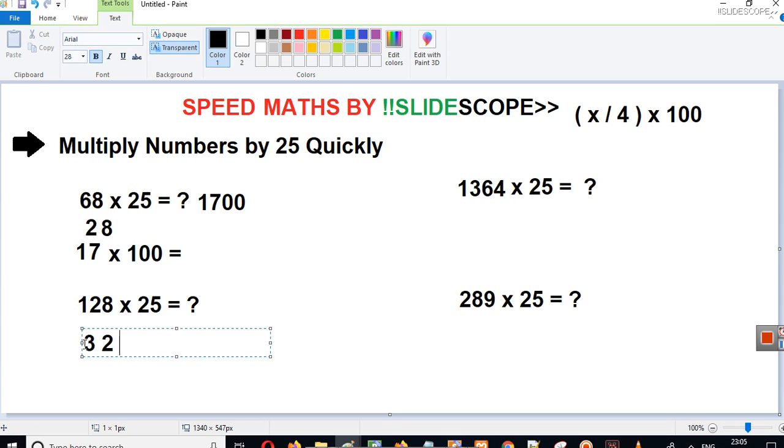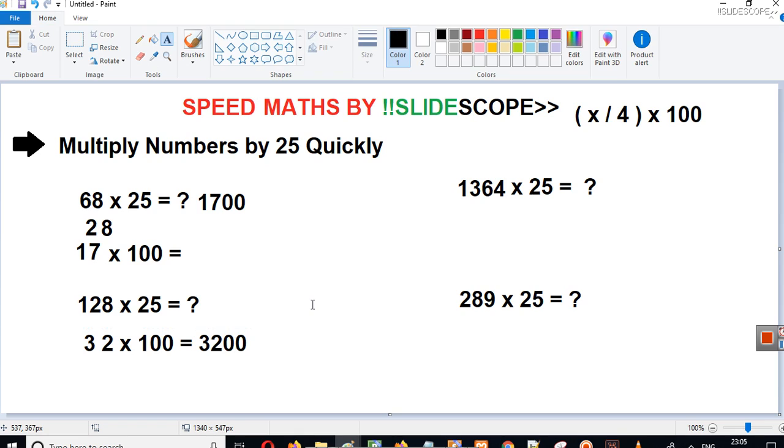And 4 into 2 is 8. So 32 and then multiply it by 100. So your answer will be 3200. So 128 into 25 is 3200.